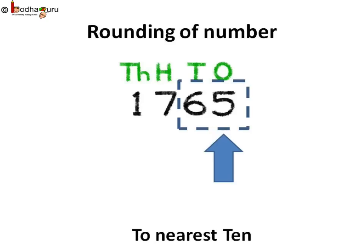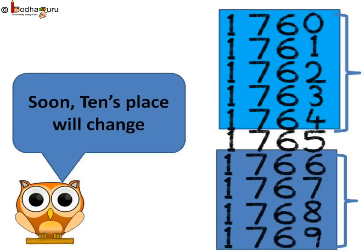Let us take another example. For example, 1765. We are rounding the number to nearest 10. So you should look at 1's place. And here the value is 5.